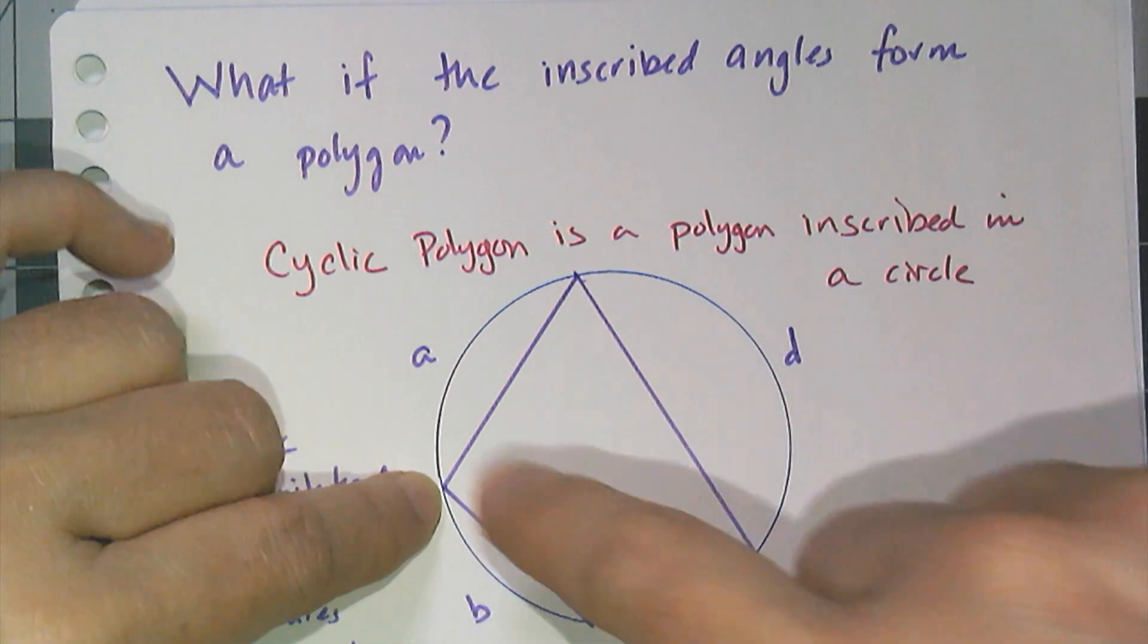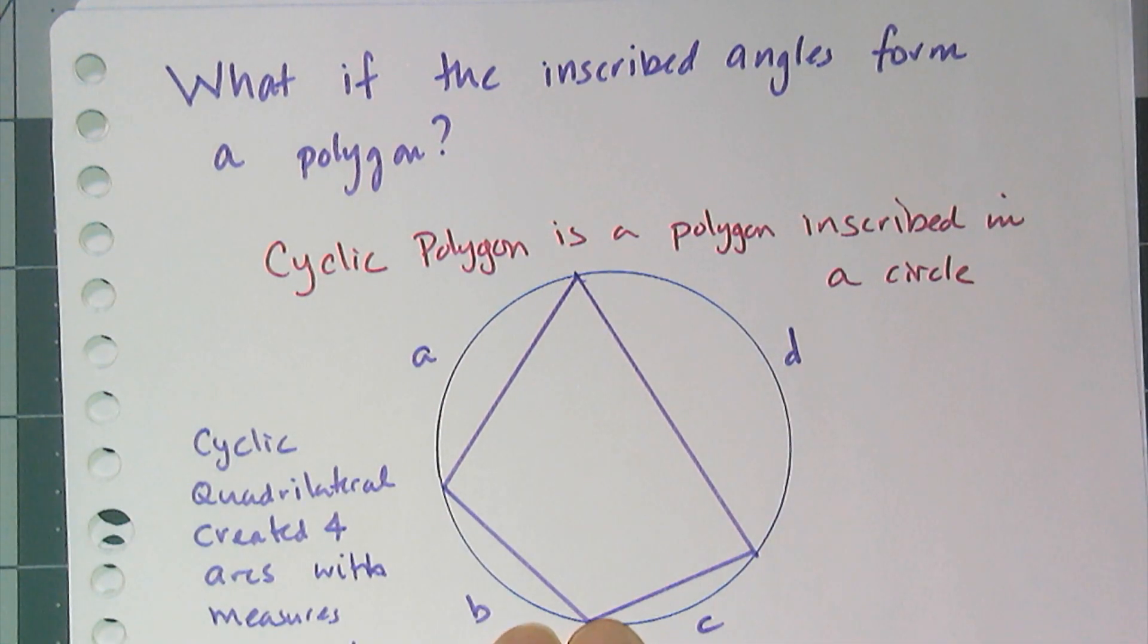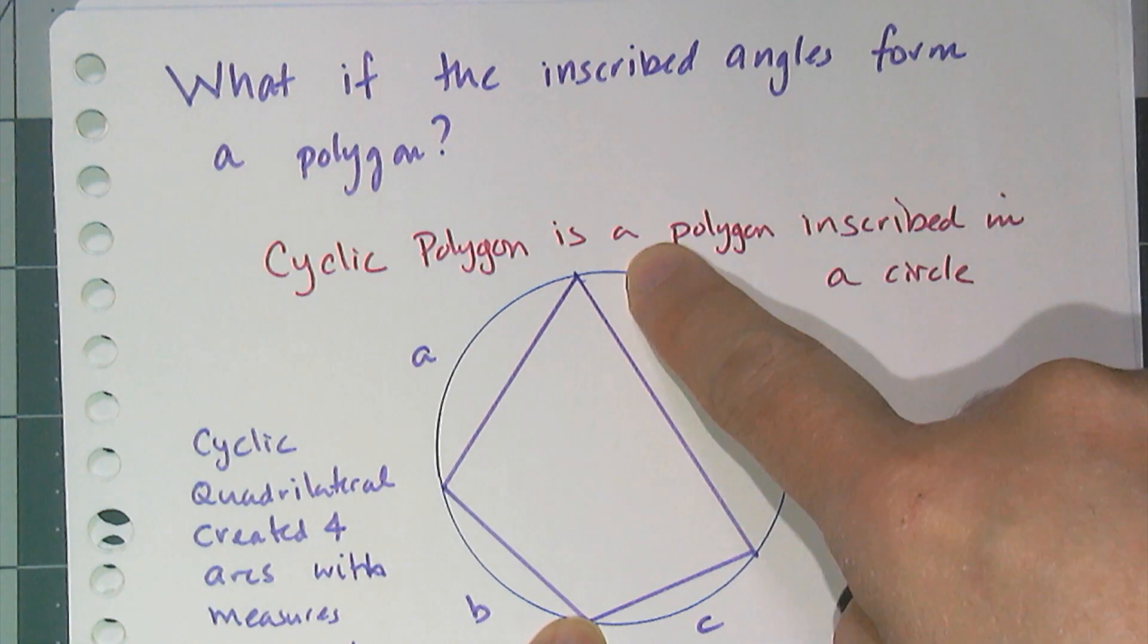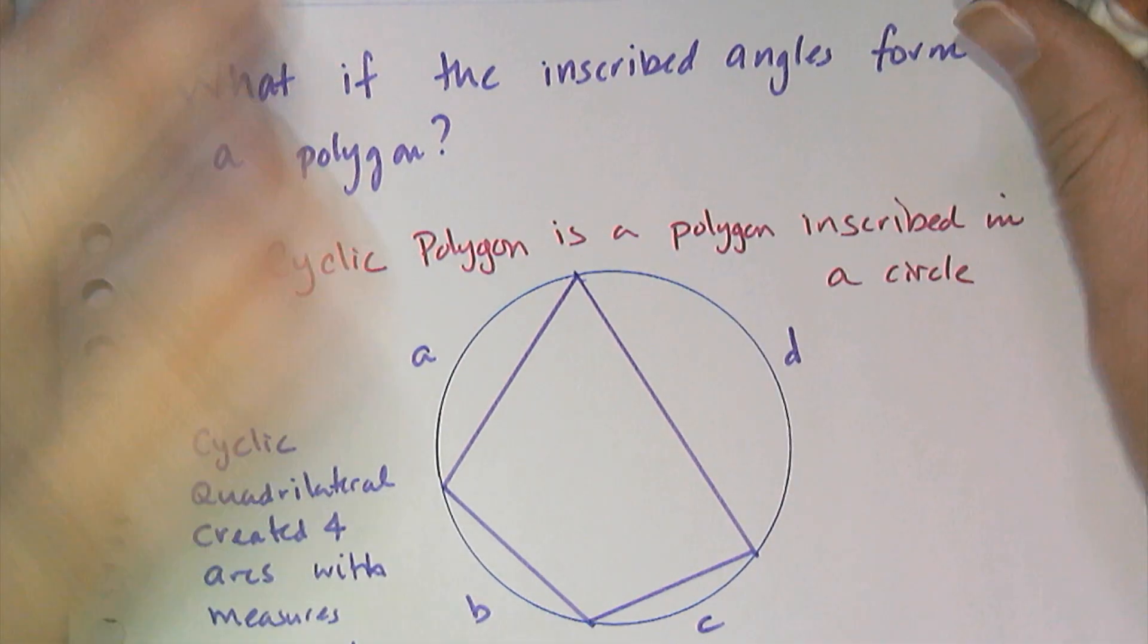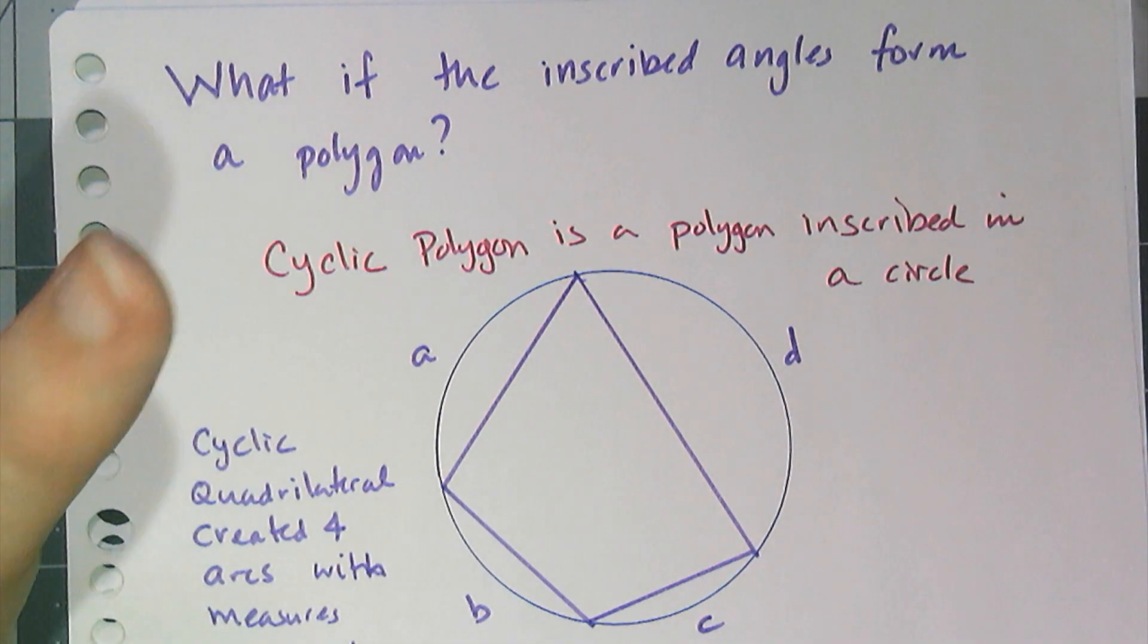So I'm saying this arc has a measure of a, this arc has a measure of b degrees, c degrees, and then d degrees. And what I'm going to focus on is not the polygon, but the angles that are inscribed, okay, that form this polygon.